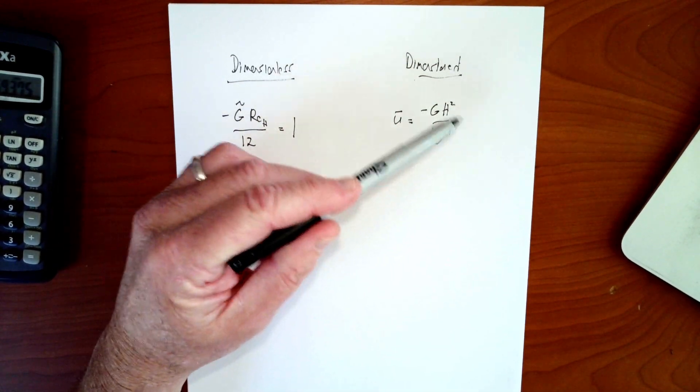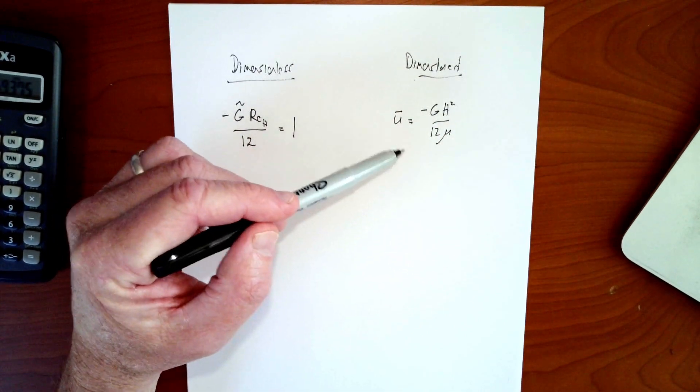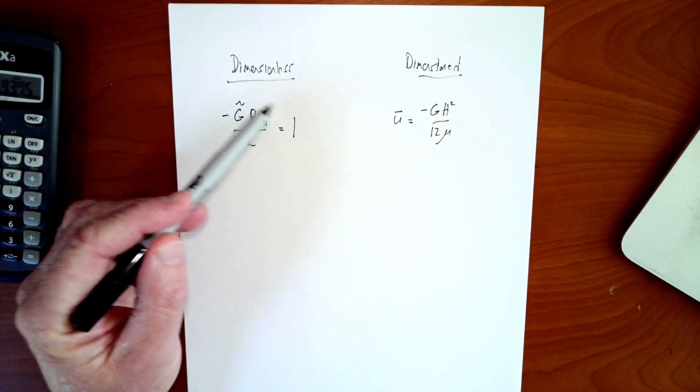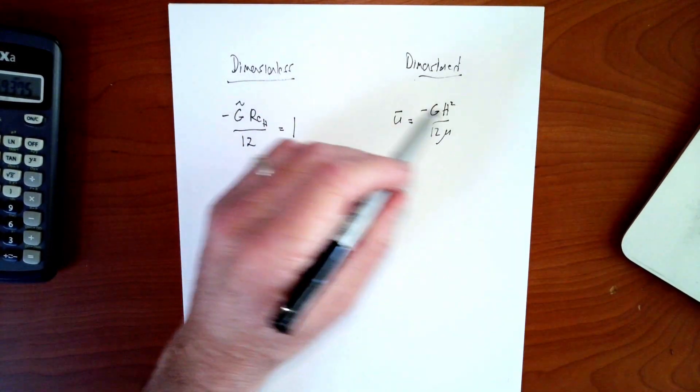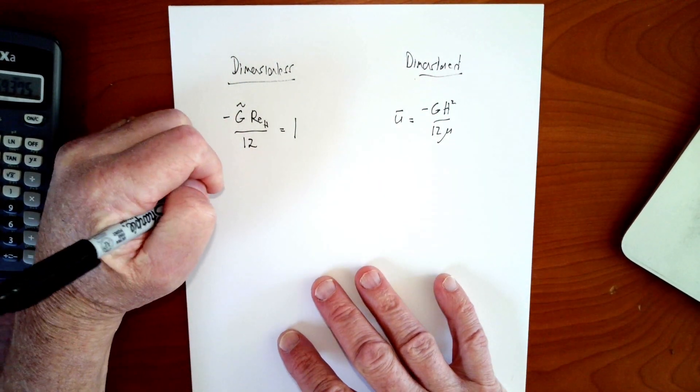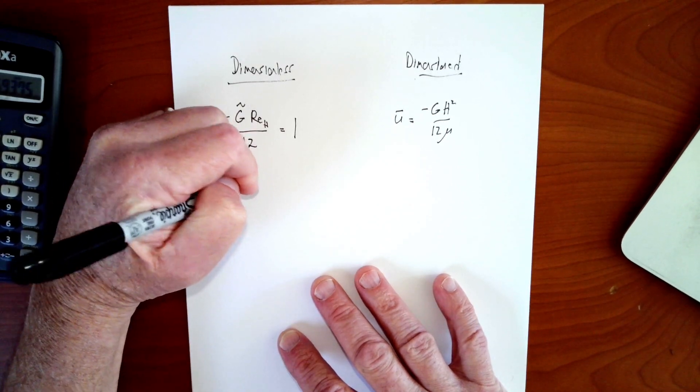And it is more explicit here. And so this is easier to use right away because you could plug these numbers in right away and get an answer, which hopefully you're getting good at doing. But this dimensionless analysis reveals an underlying physical phenomenon of the relationship between the dimensionless pressure gradient and the Reynolds number that this one really does not reveal.